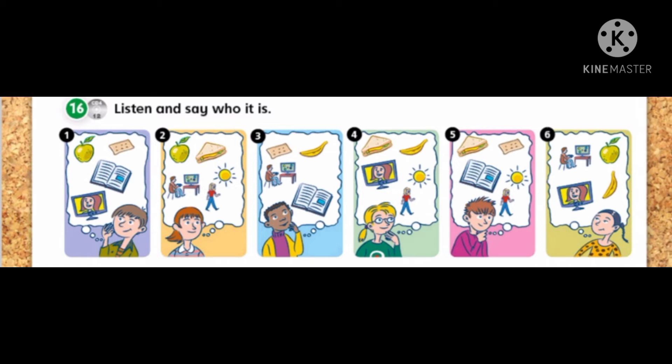Number 1. She wants an apple and a sandwich. She wants to play on her computer and go for a walk.